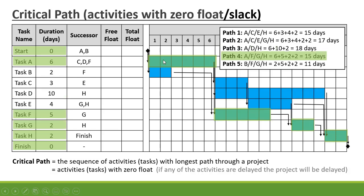Path 4 is A→F→G→H: 6 plus 5 plus 2 plus 2 equals 15 days. Path 5 is B→F→G→H: 2 plus 5 plus 2 plus 2 equals 11 days. The critical path is the sequence of activities with the longest path duration, which is Path 3 with 18 days.